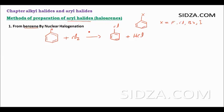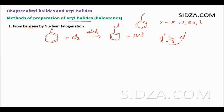Normally the reaction is carried out in the presence of a Lewis acid like AlCl3, a very common Lewis acid used for these reactions. This is an electrophilic aromatic substitution reaction because we remove the hydrogen as H+ from the ring by an electrophile Cl+.